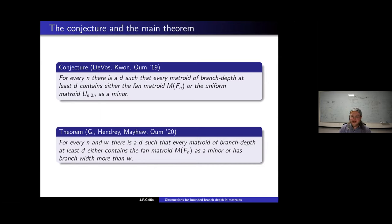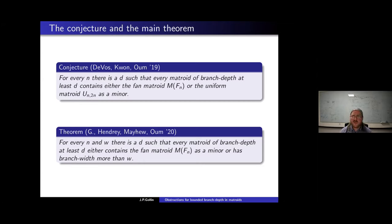Let me add that the statement about vertex minors being replaceable by pivot minors in bipartite graphs was proved in our paper using some other results. Going back to the general case, we still want to take advantage of the fundamental graph even when it does not necessarily determine the whole matroid, and for this we look at the concept of twisted matroids.